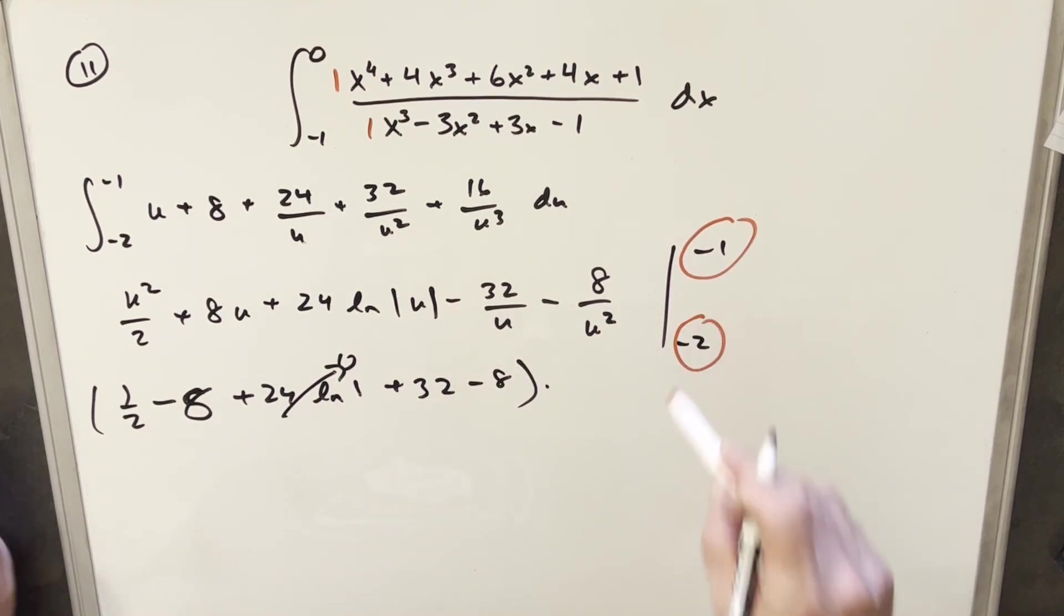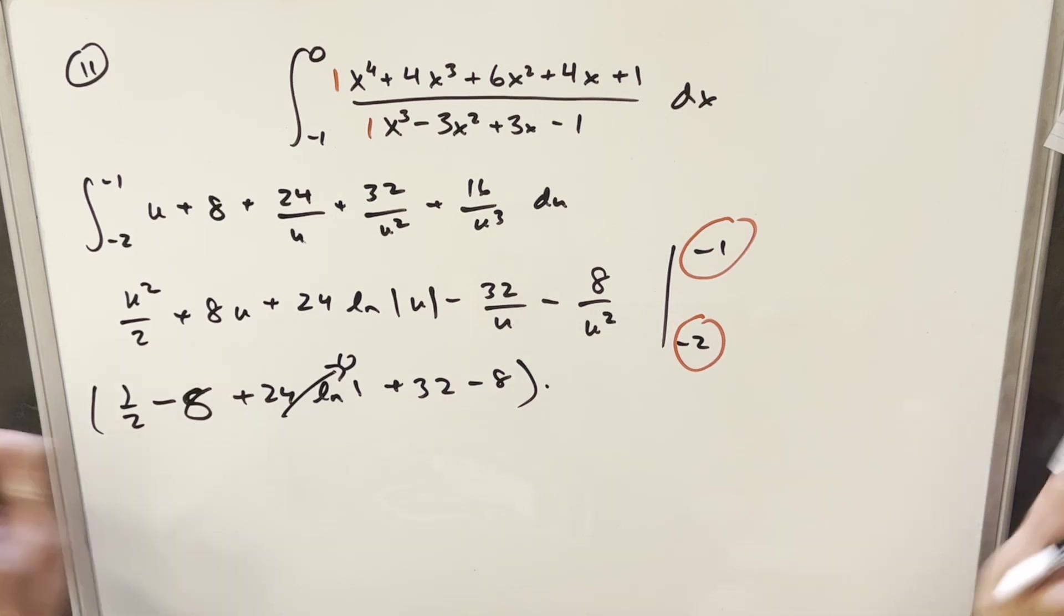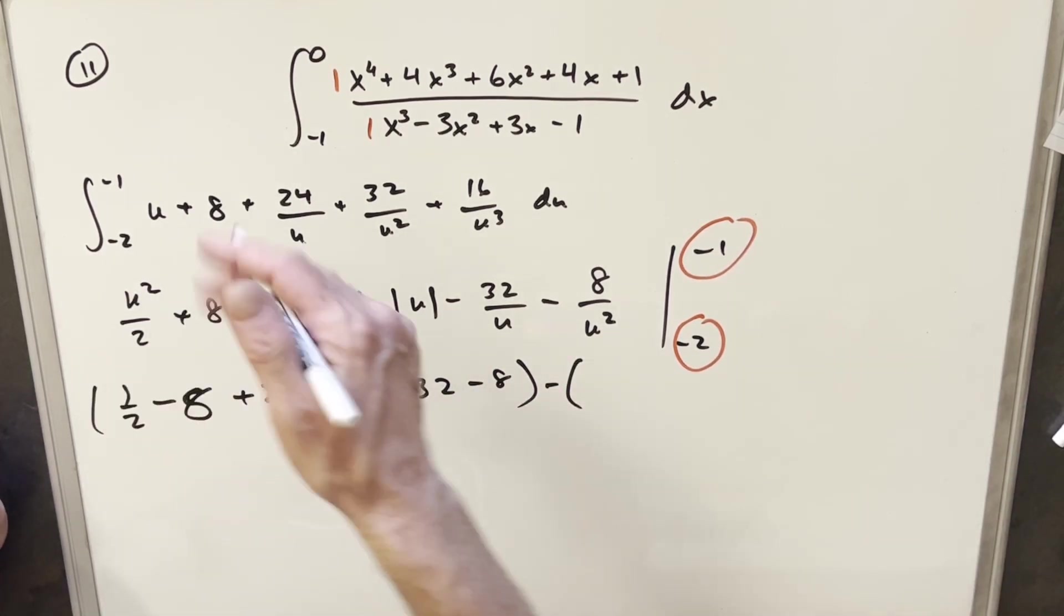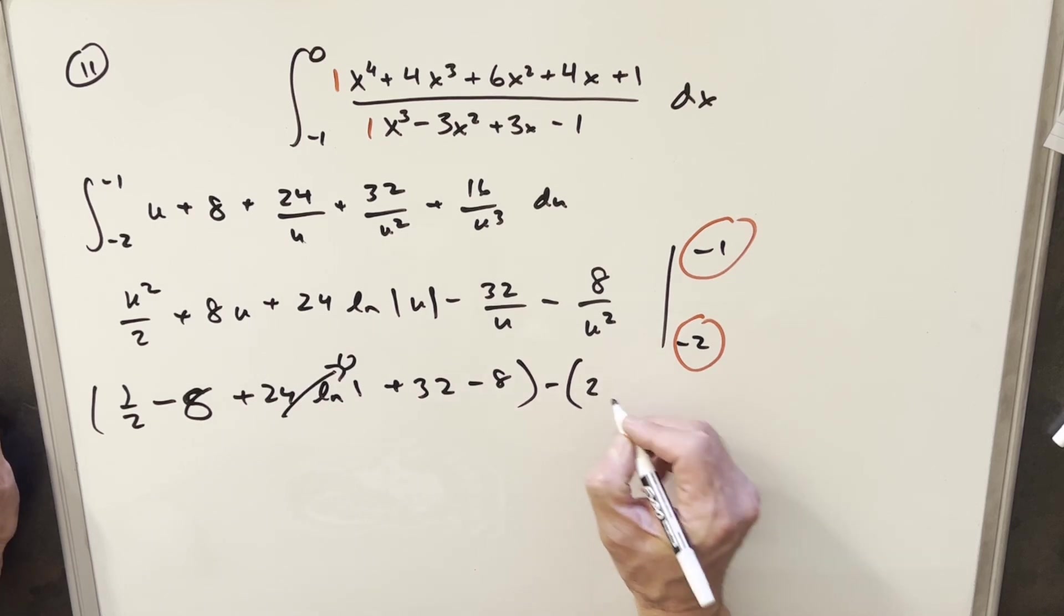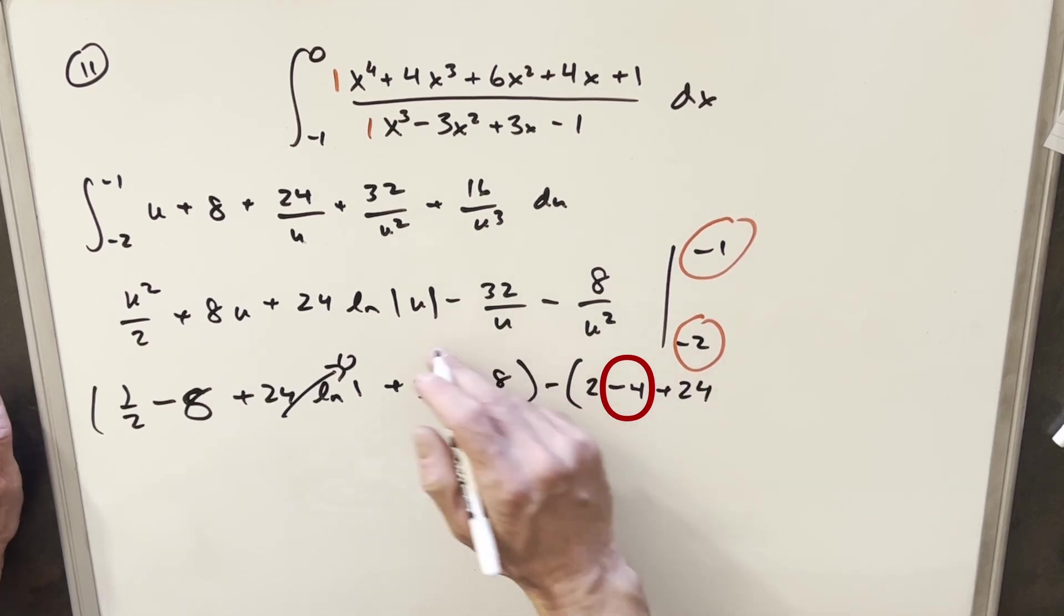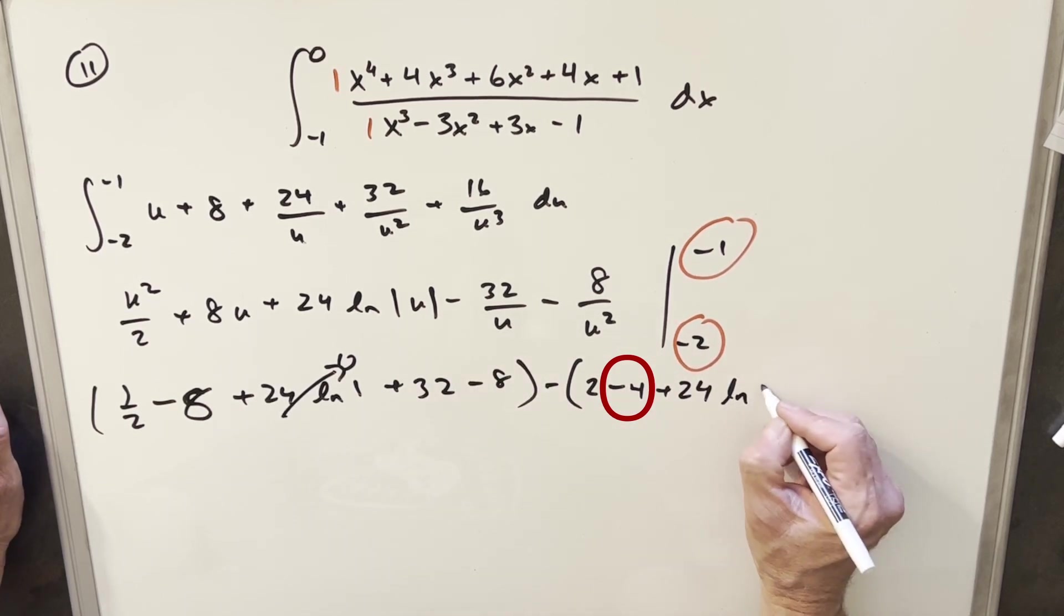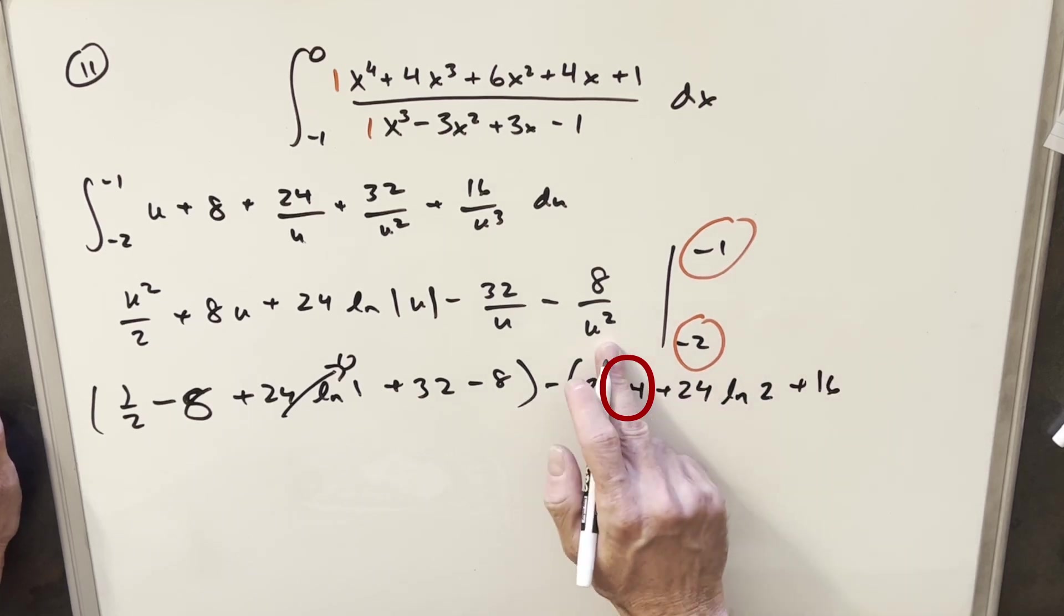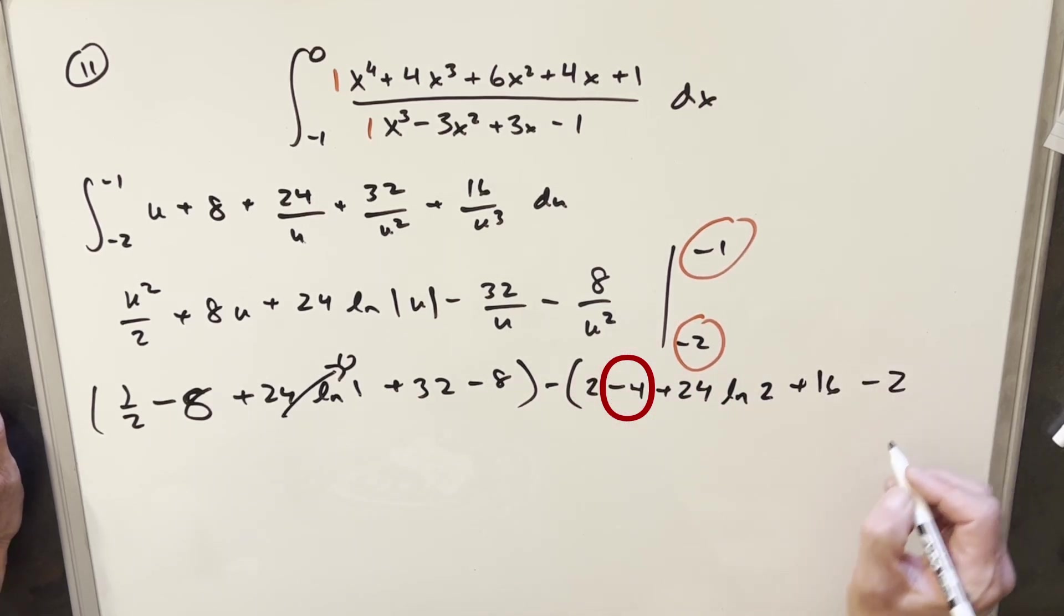Then now to evaluate our minus 2 term, let's see what we have. We'll have a minus up front. So plugging minus 2 in here, this is going to give me 2 squared 4 over 2 is 2. This is going to be a minus 4 plus 24. Natural log of absolute value 2 is going to give me natural log of 2. Here I'm going to get a plus 16. And here I'm going to get a minus 2.